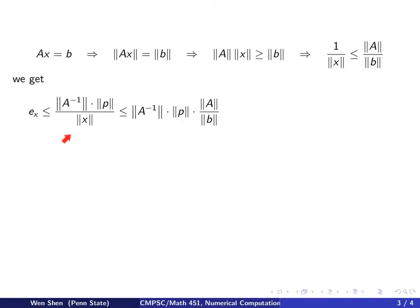So we now plug this new relation into the previous one we got in the last page. So this is what we had from the last page. EX is less than that. And then we keep the numerator, A inverse norm and P norm, and we write 1 over X norm to be less than A norm over B norm, which we got here. So we keep the inequality sign. And now we rearrange the terms. We put A inverse norm and A norm together, and then what we have is P norm over B norm, and we realize that is the relative error in the perturbation. That's my EB.